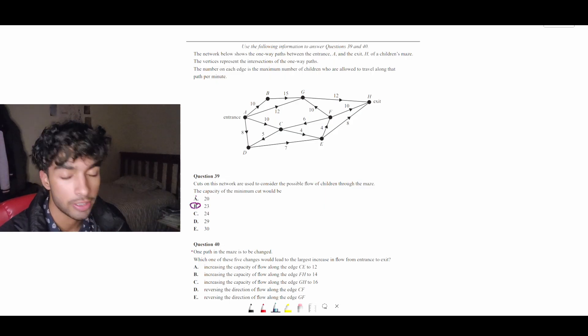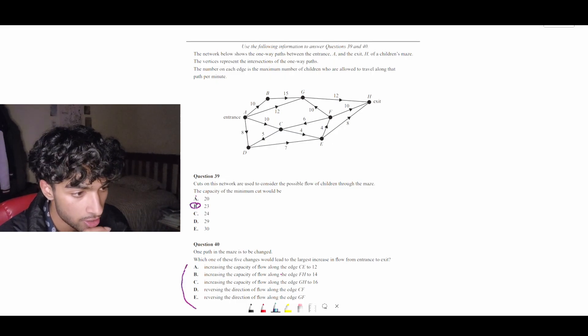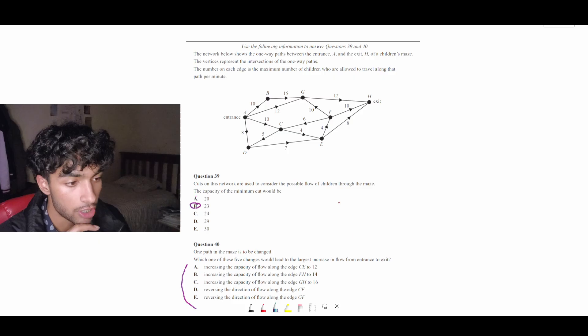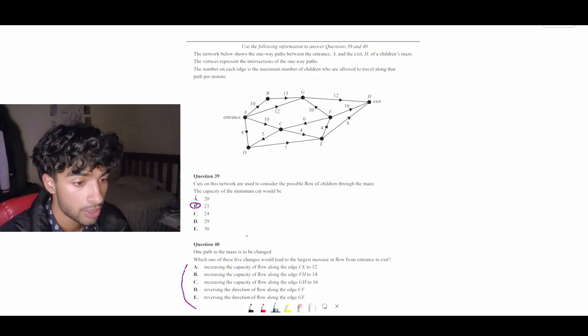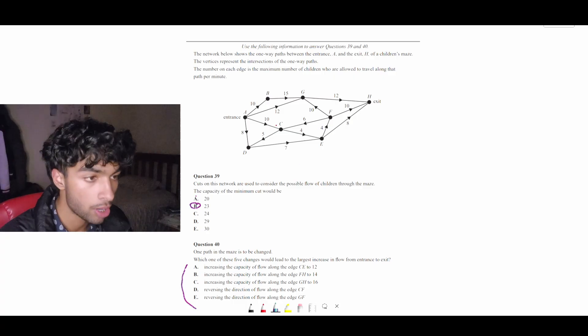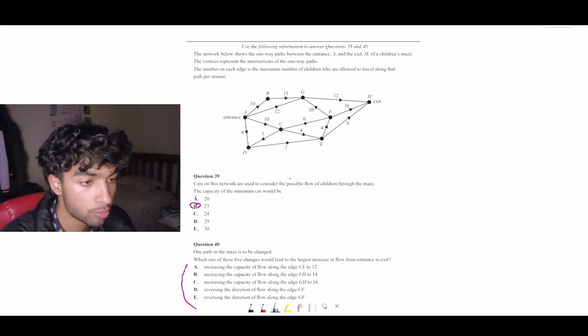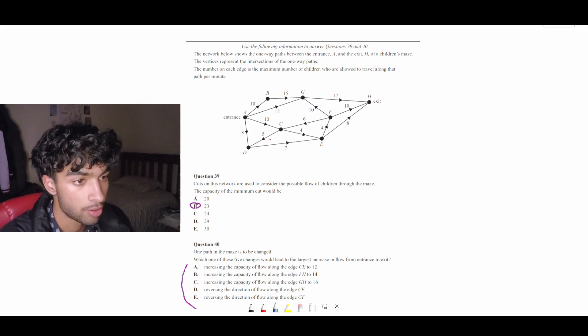Now question 40. This is the one that took a longer time to do where you can do one of these changes from A to E. And one of them will lead to the largest increase in flow. So what we can do to actually target this strategy is apply the change manually one by one from A, B, C, D, E, and then test out different minimum cuts and see which one gets the largest minimum cut. And I think on the exam, I was just doing it manually. But as we know,